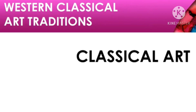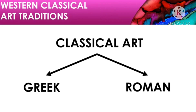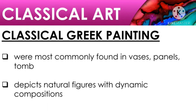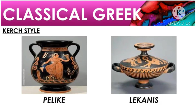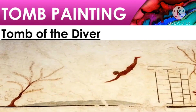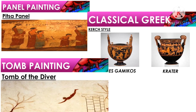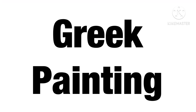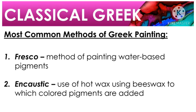The second era is classical art, which includes the Greek era and the Roman era. Paintings from the classical Greek era are commonly found on vases, panels, and tombs. They depict natural figures with dynamic compositions, and most subjects were battle scenes, mythological figures, and everyday scenes. They reveal a close linear point of view and naturalist representation. The most common methods of Greek painting are the fresco method — pigment on freshly applied plaster, usually on a wall surface — and the encaustic method, which was developed by Greek shipbuilders who used hot wax to fill the cracks of ships.